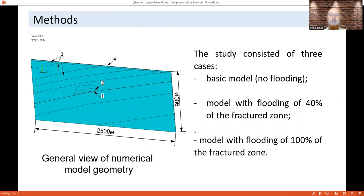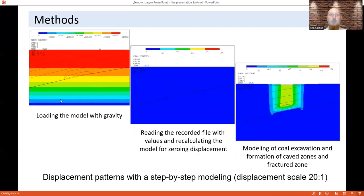General view of numerical models can you see on the slide. The study consisted of three cases: basic model, model with flooding of 40% of the fractured zone, and model with flooding of 100% of fractured zone. The simulation was carried out step by step as follows. Step 1: Loading the model with gravity, followed by writing the values of stress and displacement in all nodes of the model to file.